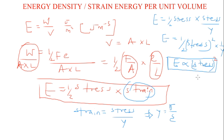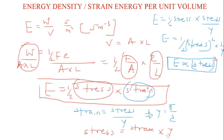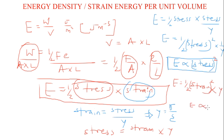Now let's find the relationship between energy density and strain. Stress is also equal to strain multiplied by Young's modulus. So instead of stress, I substitute strain times Young's modulus into the formula — the strain terms multiply to give strain squared, multiplied by Young's modulus. Therefore, the energy density is proportional to the square of the strain.